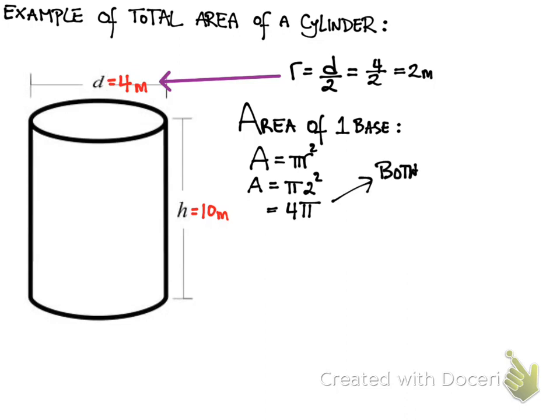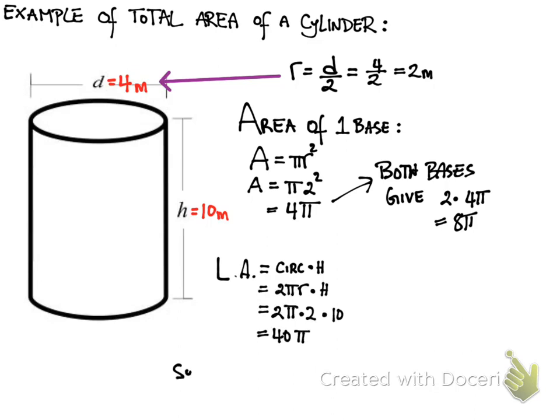So here we have the area of one base is pi r squared, because we have a circle. The radius is 2, which is half the diameter. And so pi r squared becomes pi times 2 squared, which is 4 pi. But because there's two bases, we multiply that by 2, and we get that both bases have an area of 8 times pi.